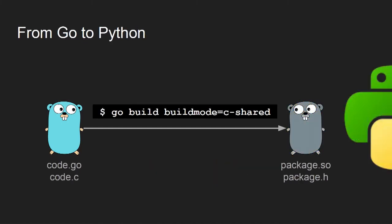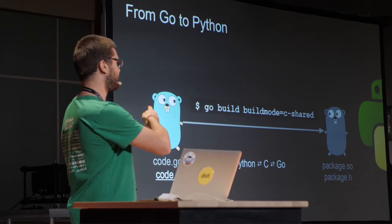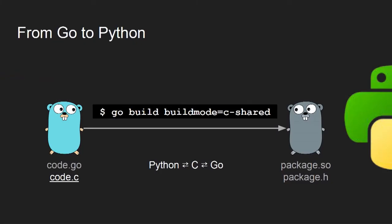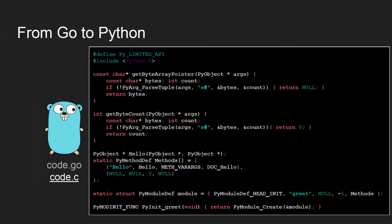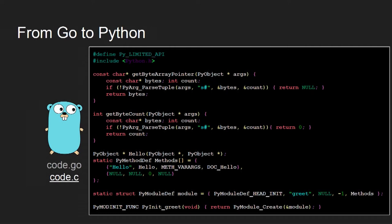From Go to Python, it's not the same story at all. You can use `go build -buildmode=c-shared` because what you will build is a C shared library. You will go from Go to C to Python and from Python to C to Go. It means that you will have to write some C code — memory management, importing Python headers.